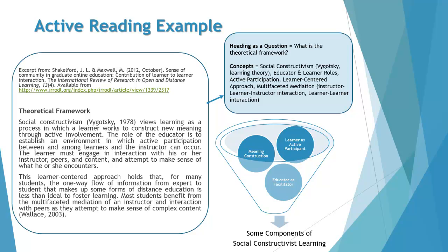The heading for this section of the article is Theoretical Framework, so I've asked myself the question: what is the theoretical framework? Next, I've jotted some notes down about concepts or key terms that I'm seeing just in these two paragraphs. And then at the bottom of the screen, you'll see an image — I used the WordArt function in PowerPoint to create that. It's essentially a process organizer, a way to summarize very quickly as an example of how you can use an image to summarize what you're learning. You can see there we have three components of social constructivist learning related to the brief excerpt.